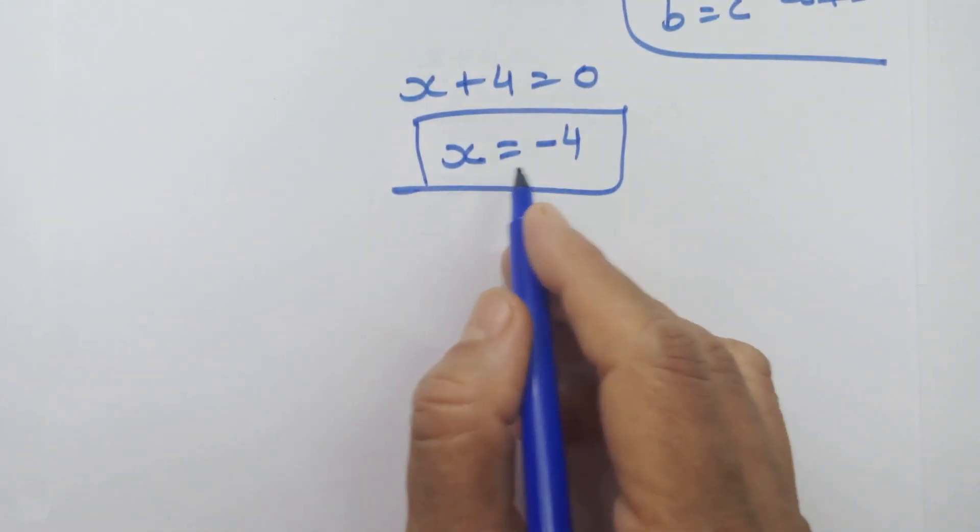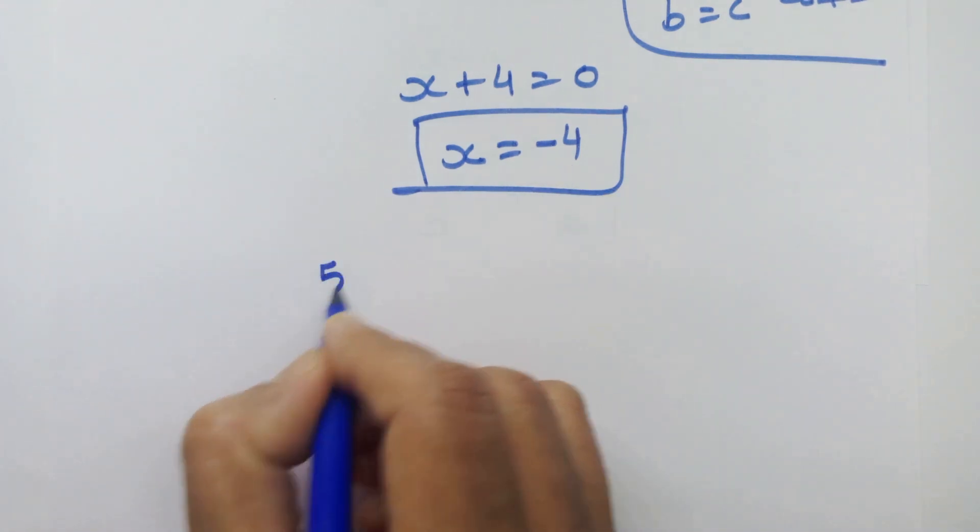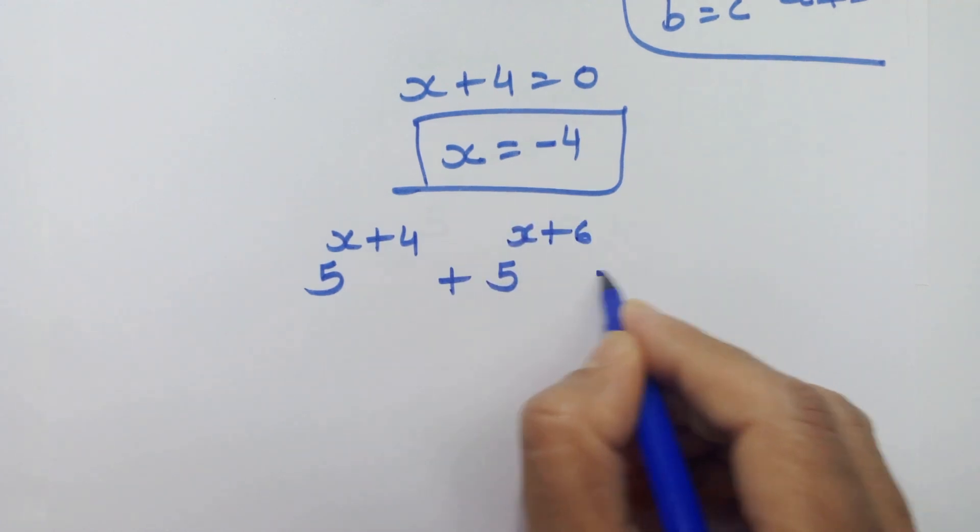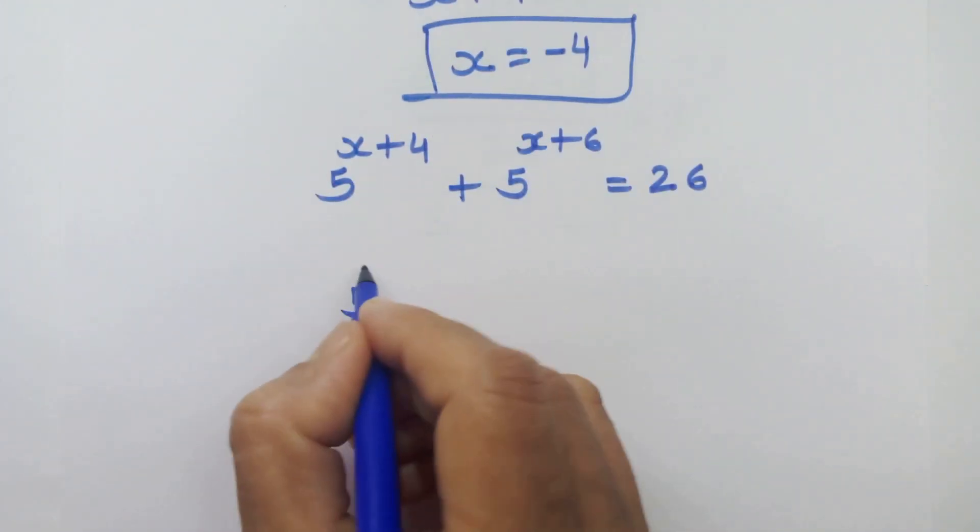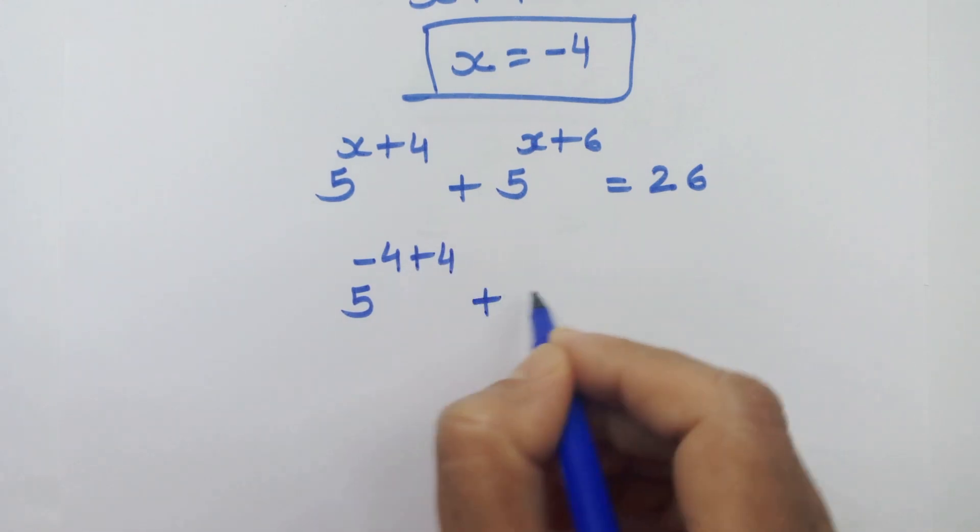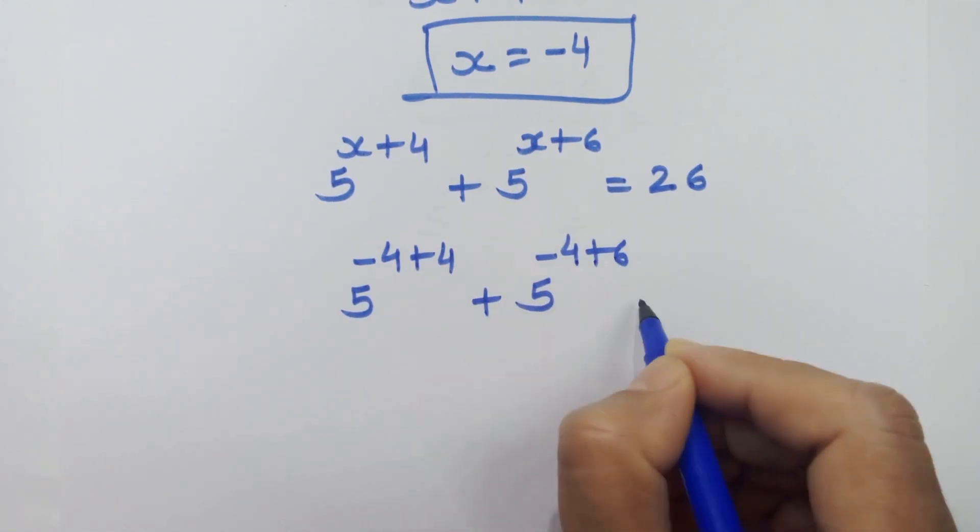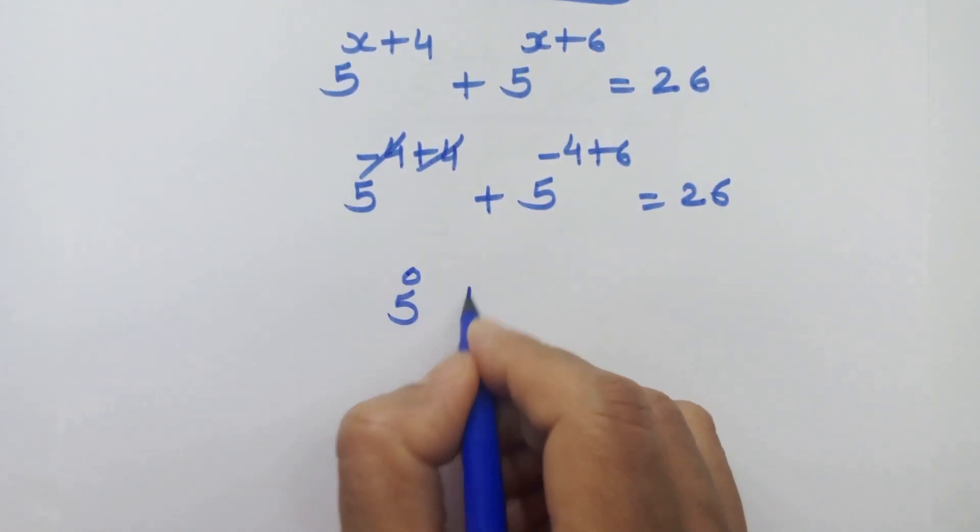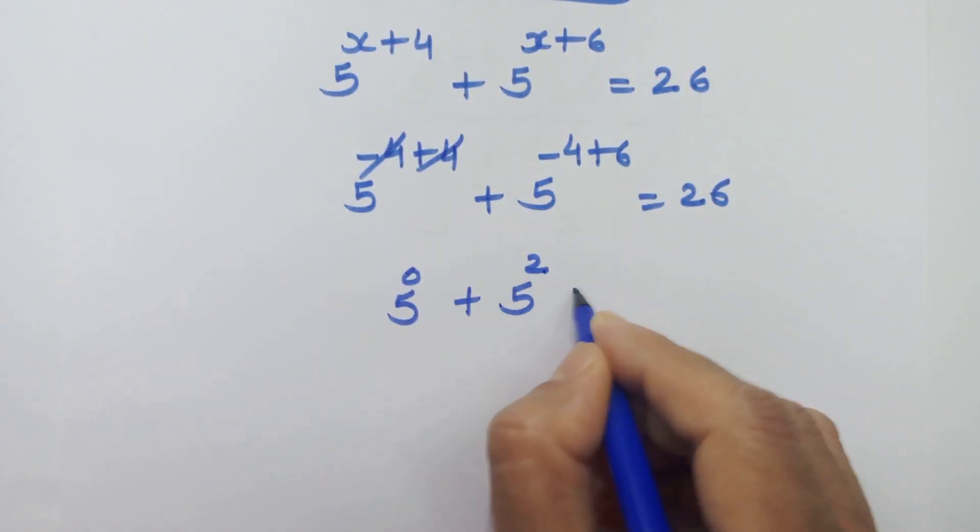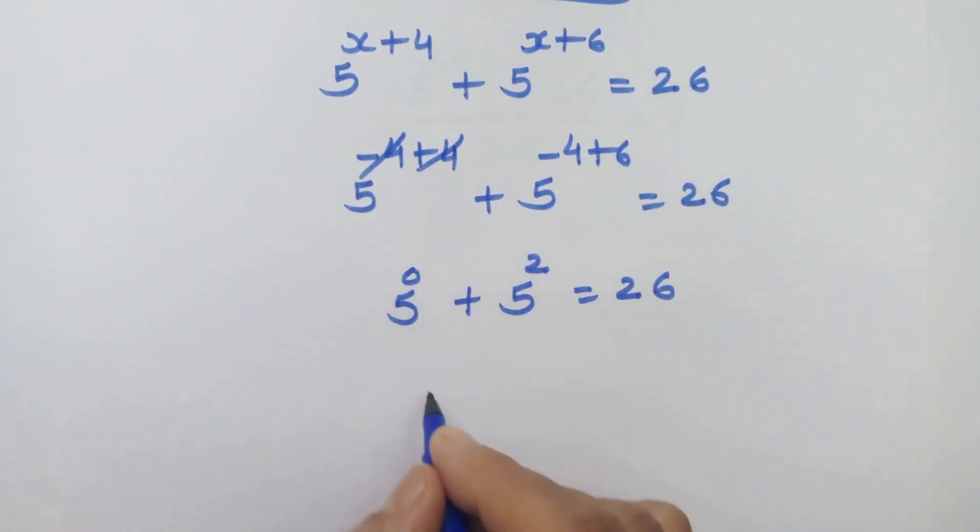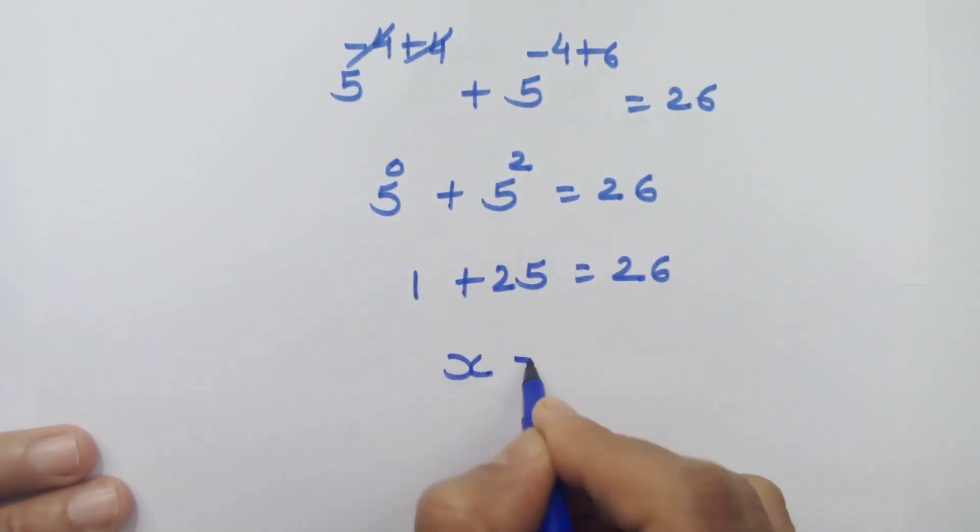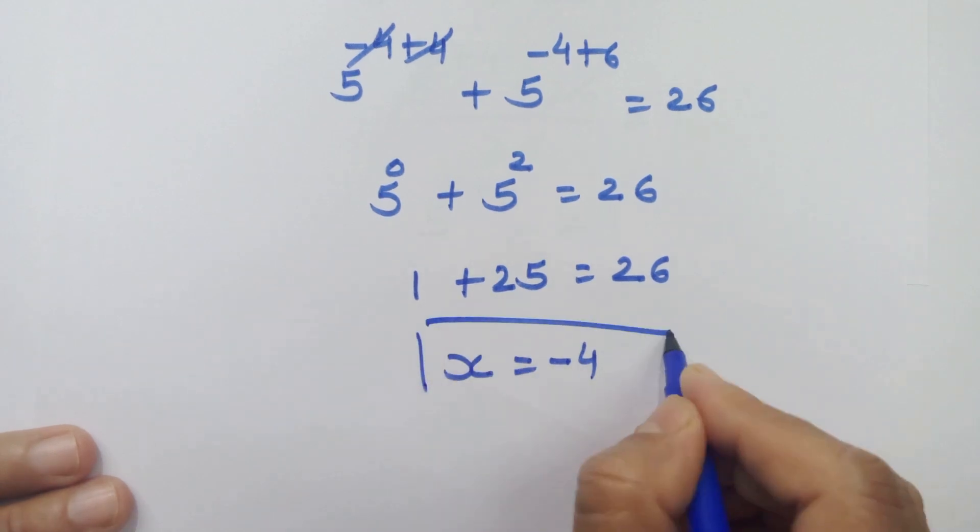Let's put this value of x in our main equation. This will be cancelled. So we have 5 raise to 0 plus 5 square is equal to 26. So 5 raise to 0 is equal to 1 plus 25 is equal to 26. So x is equal to minus 4 is the correct answer.